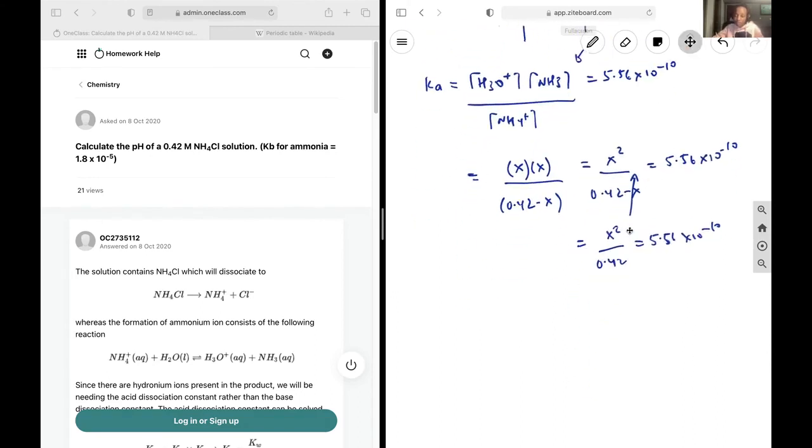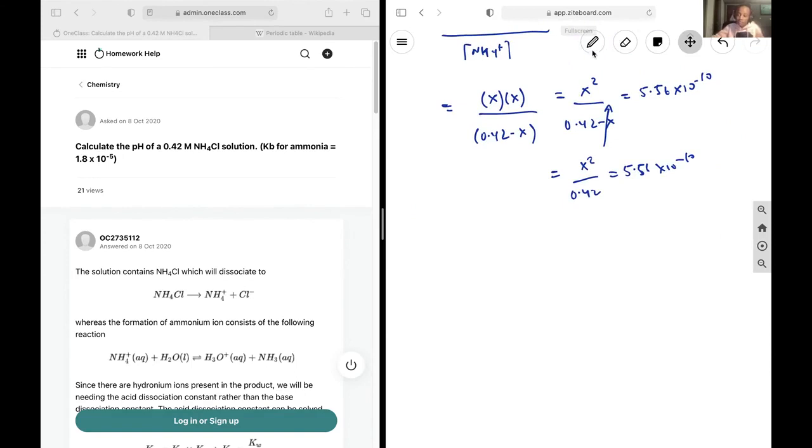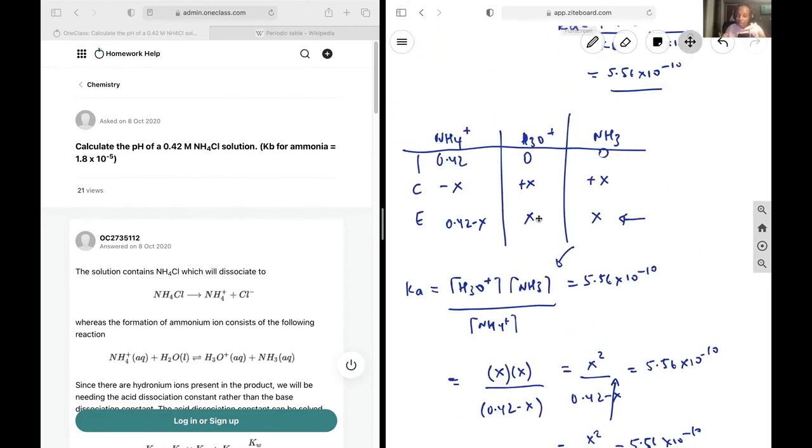Now from there, simply isolate for x. And we get x is the square root of 5.56 by 10 to the negative 10 multiply by 0.42. Meaning x is going to be 1.53 times 10 to the negative 5. And so this is going to be our concentration of hydronium ions at equilibrium.